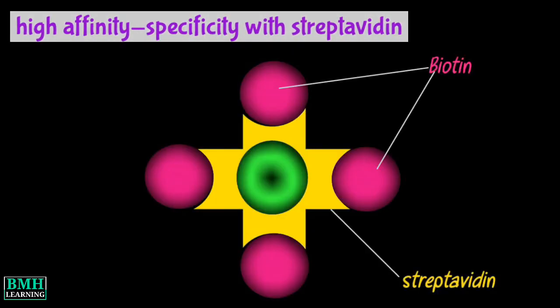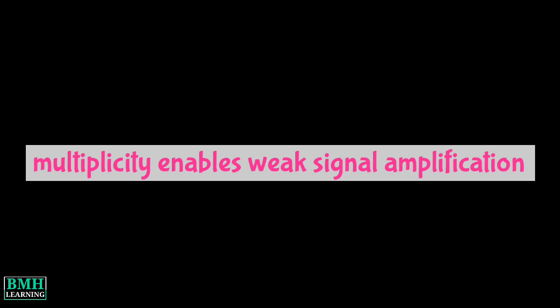The second is the high affinity and specificity with which biotin and streptavidin bind to each other. This in large part is due to the tetrameric conformation of streptavidin. One streptavidin protein has the capacity to bind four biotin molecules with high affinity and selectivity, and this multiplicity enables the amplification of weak signals.